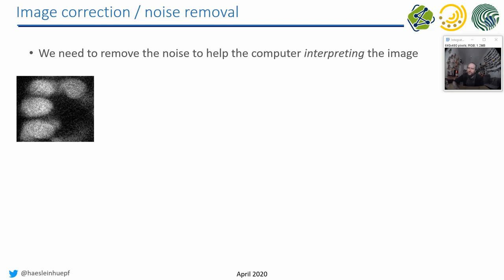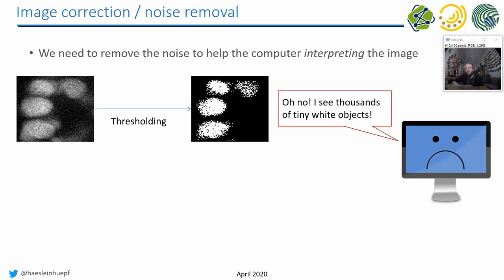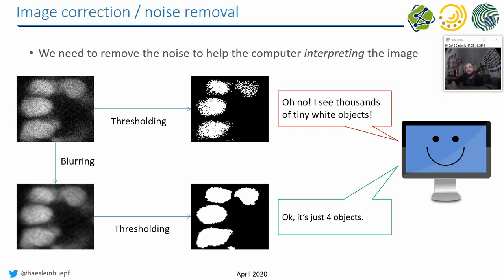So why do we have to remove noise in order to work with images further? If you take an image as it comes out of the microscope and apply an algorithm called thresholding, the computer may think there are thousands of tiny white objects in the image. But if we blur the image first - which is a step allowing us to remove noise - and apply thresholding afterwards, then the computer may suddenly see the four objects we were also perceiving. This is the necessary step we have to do in order to do proper image segmentation and get proper cell counts out of images.